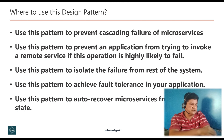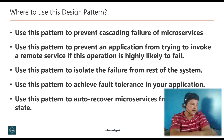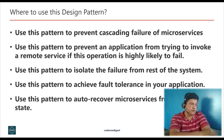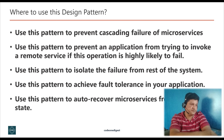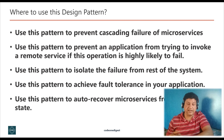Now let's understand where to use this design pattern. Use circuit breaker design pattern to prevent cascading failure. Use it to prevent an application from trying to invoke a remote service if the operation is likely to fail. Use this pattern to isolate the failure from the rest of the system, to achieve fault tolerance in your application, and to auto-recover microservices from failure — adding the capability of self-recovery in microservice architecture.